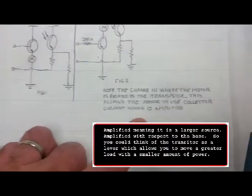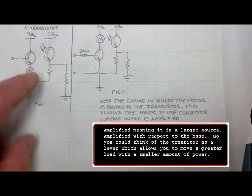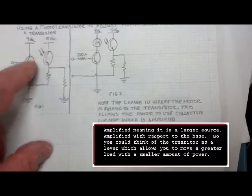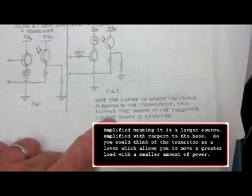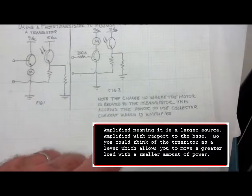And here we just have a note about the change from wiring the motor to the emitter side versus the collector side. It allows the motor to use the collector current, which is amplified.